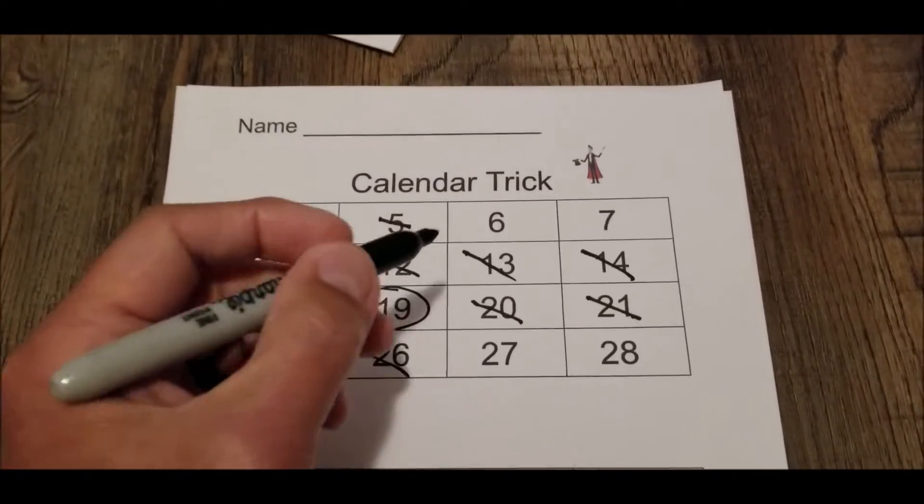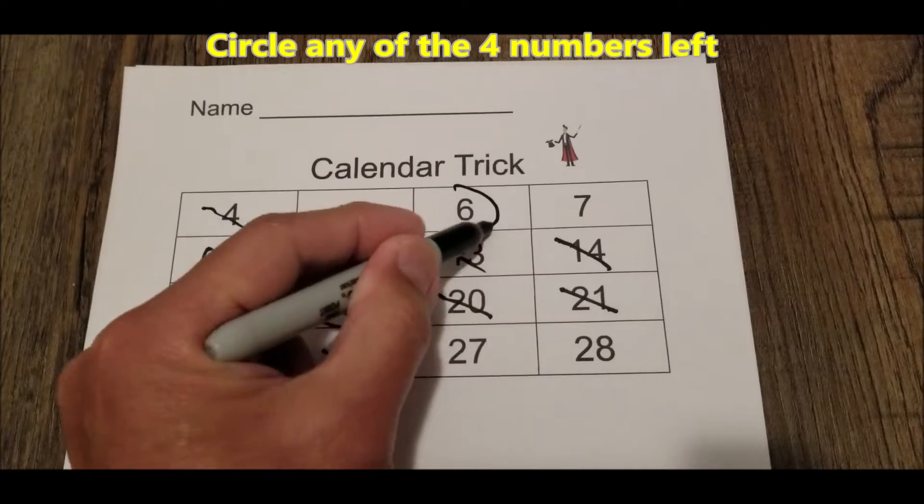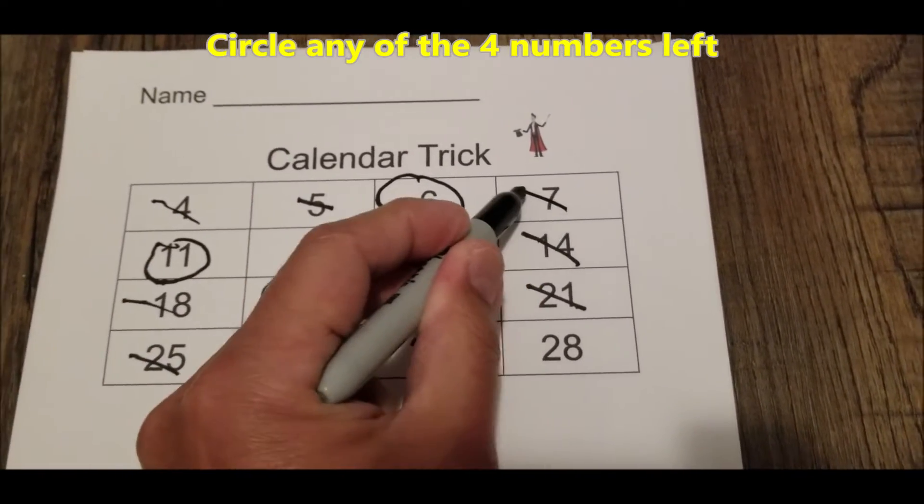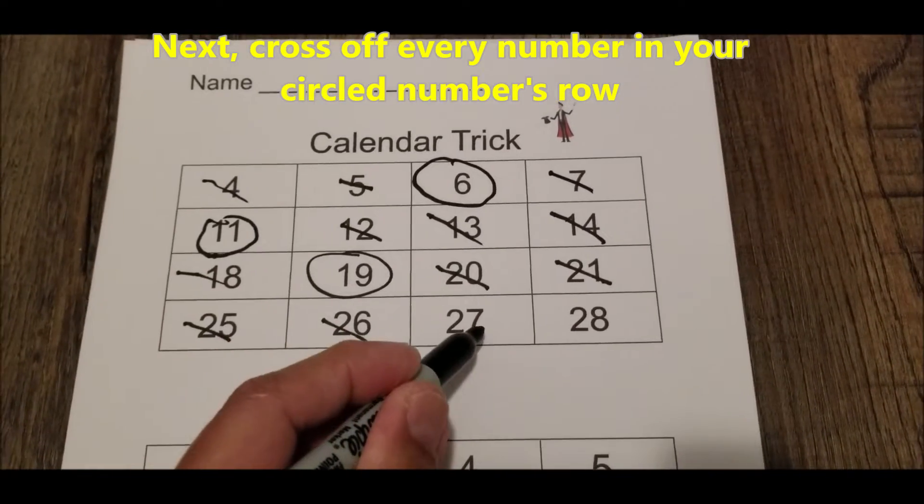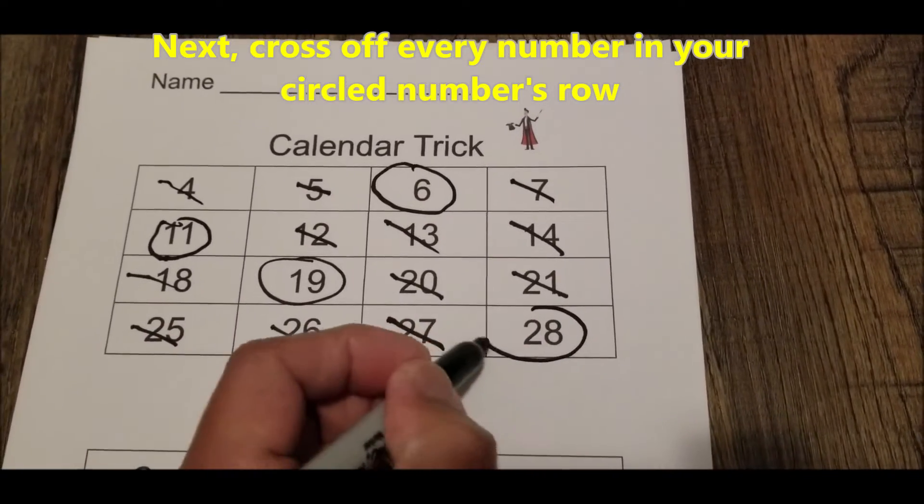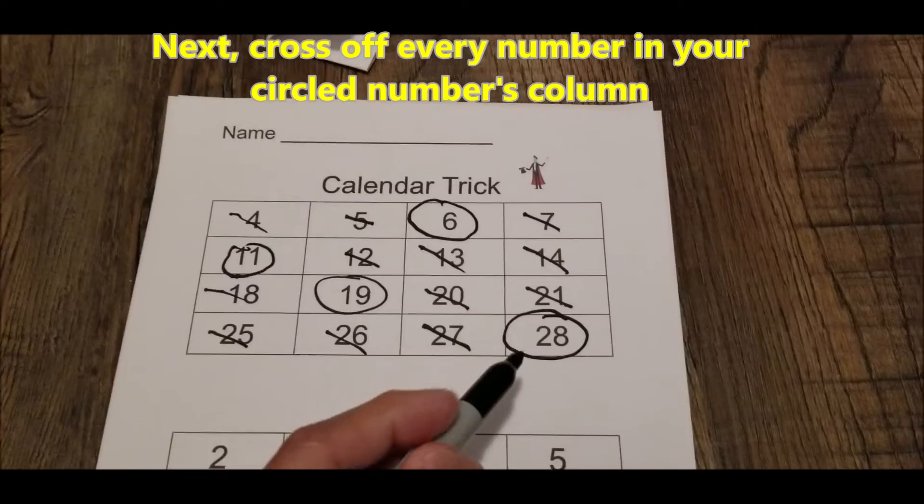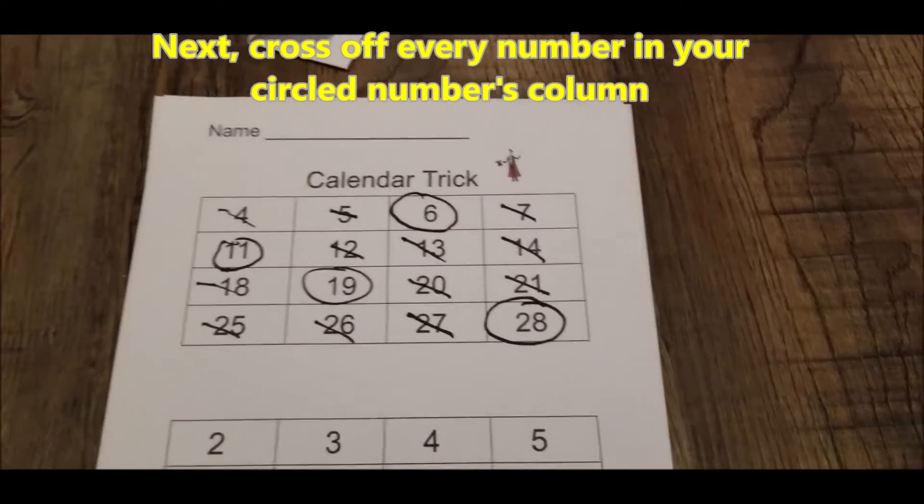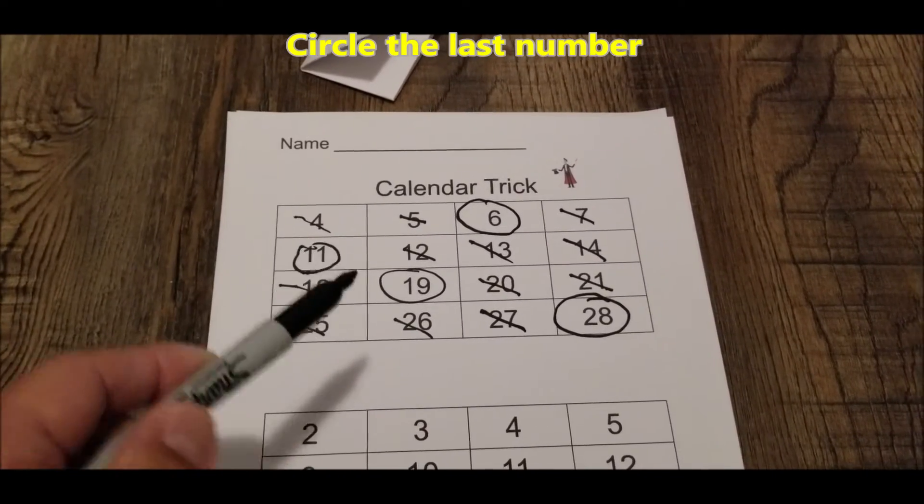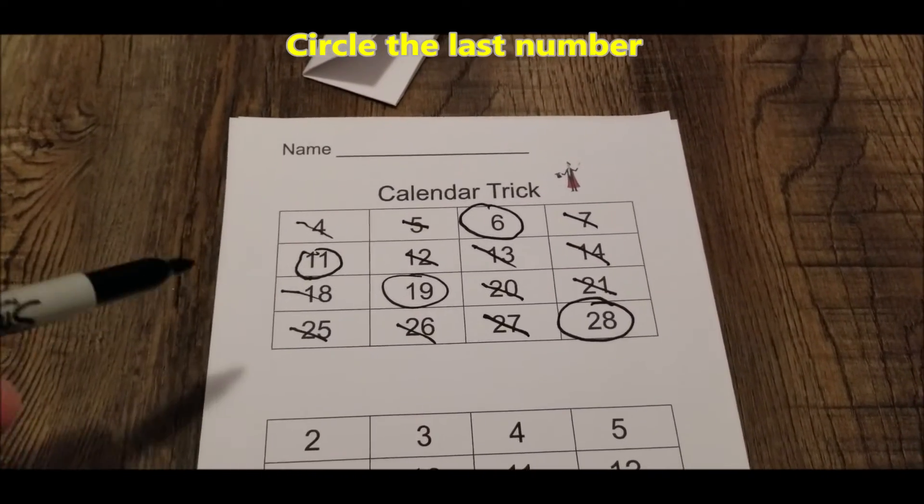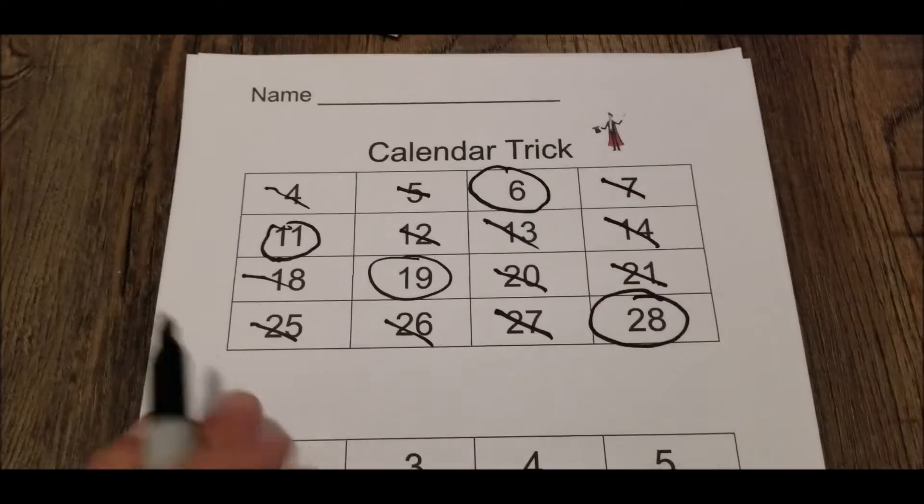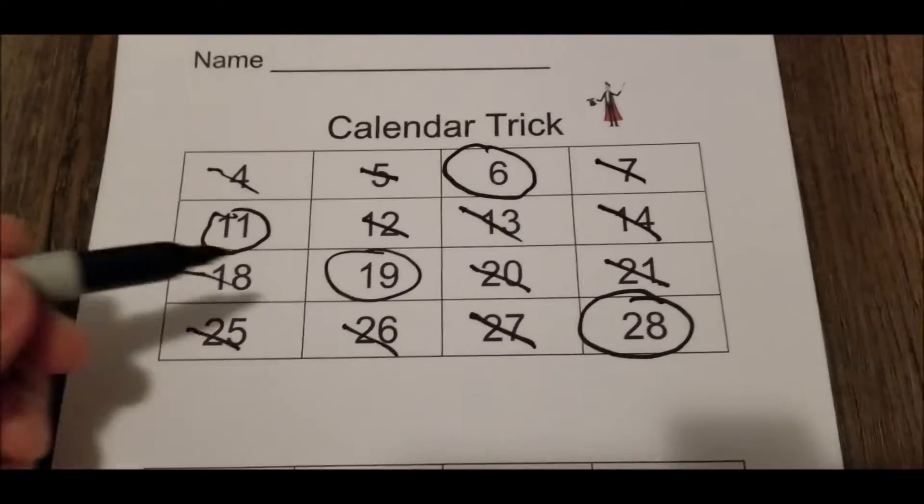And so I'm going to do the same thing. I'm going to circle one of the remaining numbers. And I'm going to do like I've done before. Cross off every number in its row. Cross off every number in its column. And I'm left with one number left. And I'm going to go ahead and just circle that number there. So if you did this at home, my four numbers are probably different than your four numbers. But watch this.